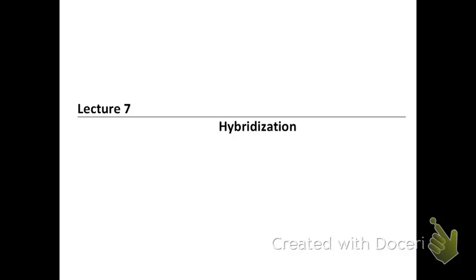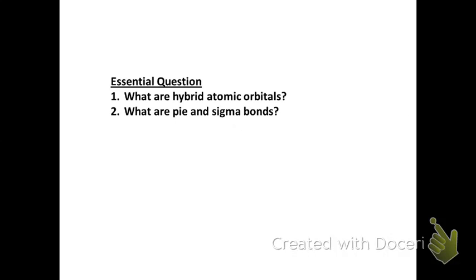Welcome to lecture 7 on hybridization of our bonding unit. The questions we're going to address in this lecture are: what are hybrid atomic orbitals, and what are pi and sigma bonds? The idea is looking at hybridization and how it affects chemical bonding.